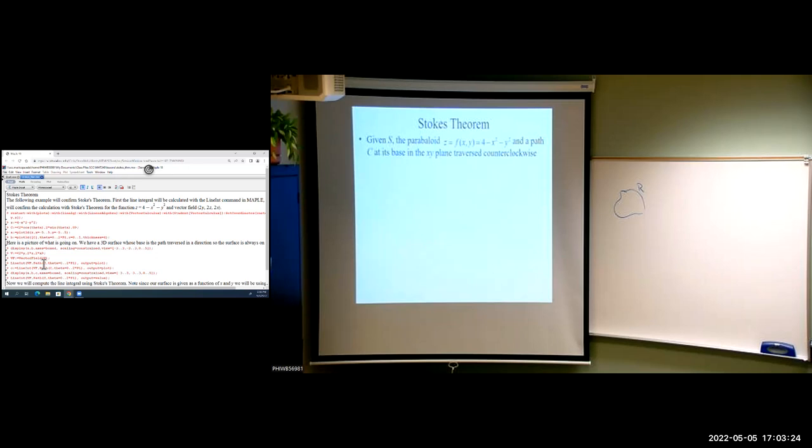So for example, let's say we have the paraboloid 4 minus X squared minus Y squared, which looks like this. And then C is going to be a path along the base. So you can see that black line there along the base.